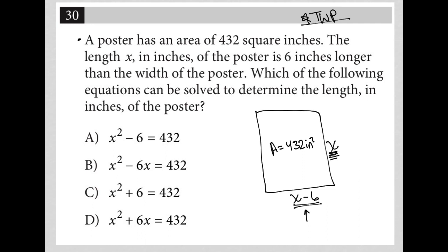The area is just the length, x, times the width. We find area by length times width. So x times x minus 6 is equal to our area, which is 432. When I distribute this x across the parentheses, I get x squared minus 6x equals 432.